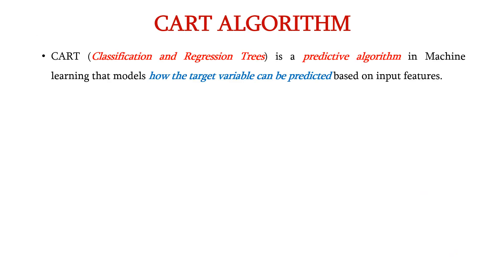CART, which is the abbreviation of Classification and Regression Trees, is a predictive algorithm in machine learning that models how the target variable can be predicted based on the given input features.